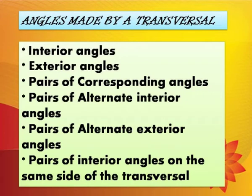Next, angles made by a transversal. A transversal makes the following angles: interior angles, exterior angles, pairs of corresponding angles, pairs of alternate interior angles, pairs of alternate exterior angles, and pairs of interior angles on the same side of the transversal. Let us see each and every definition clearly.